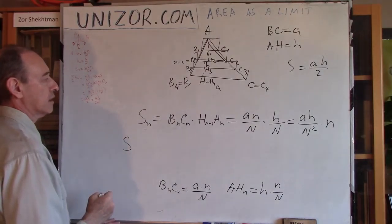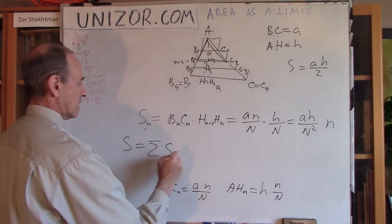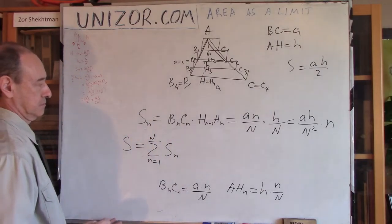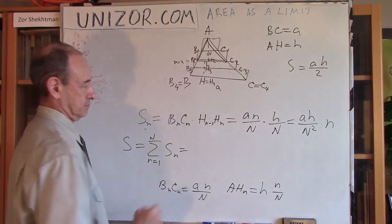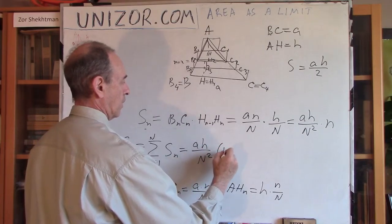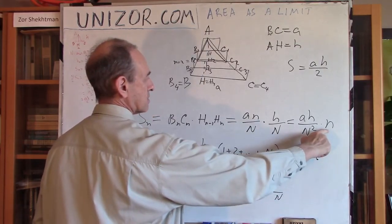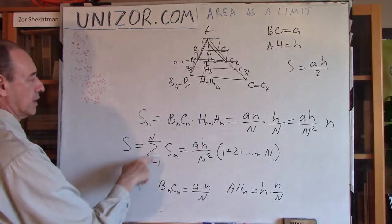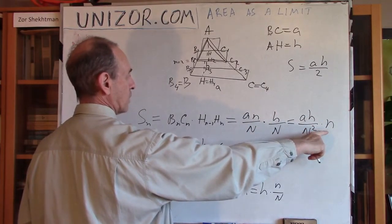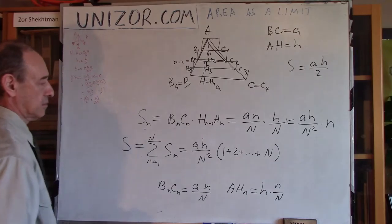Now, the area which I am interested in is sum of this. Sum of Sn, when n is changing from one to capital N, which is equal to what? AH over N squared, one plus two plus et cetera plus N, right? Because this is changing from one to capital N, right? So if I'm summarizing, for S1 it's one, for S2 it's two, et cetera. When I'm summarizing, I can just factor out this and I will have this in parentheses.